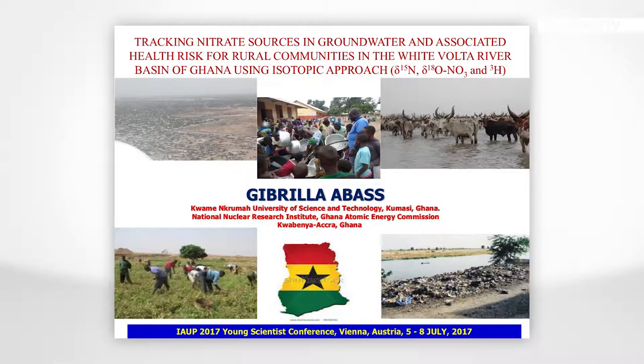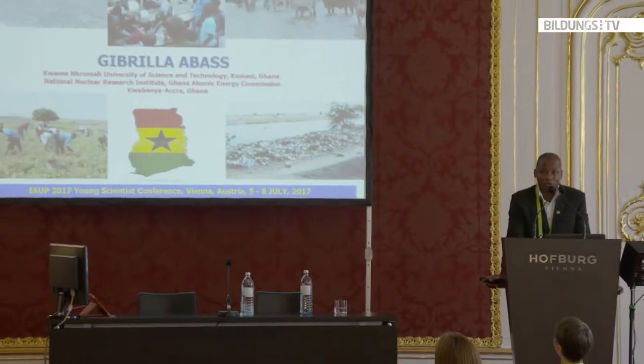My name is Jibrila Abbas, a PhD student from Kwame Nkrumah University of Science and Technology, Kumasi, Ghana. I currently work as a research scientist at Ghana Atomic Energy Commission and my area of expertise is in isotope hydrology. I will be presenting on tracking nitrate sources in groundwater and associated health risk for rural communities in the White Volta River Basin of Ghana using an isotopic approach.